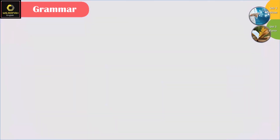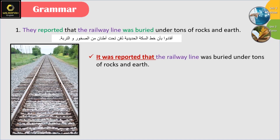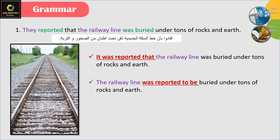Now number 1: 'They reported that the railway line was buried under tons of rocks and earth.' We can say: 'It was reported that the railway line was buried under tons of rocks and earth.' Or we can say: 'The railway line was reported to be buried under tons of rocks and earth.'